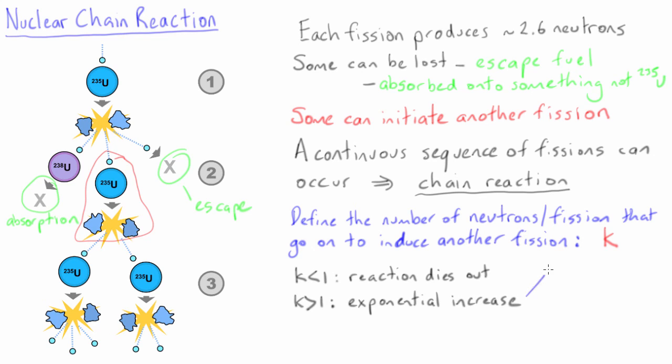If K is much greater than 1, the timescale for neutron reproduction is short, and the fuel is physically contained from flying apart, the exponential increase can result in a large fraction of the fuel undergoing fission. Something designed to work in this way is the basis of a nuclear weapon.